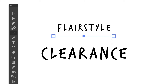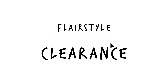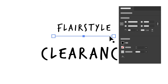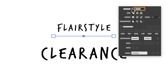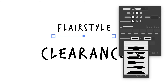You'll immediately notice that we've created a visual hierarchy between Flare Style and clearance, but this line doesn't match the look we're going for. There are lots of ways to give a line more character. From the options in the stroke panel you can make the stroke weight thicker, round the corners of the lines, and even experiment with different profiles from the presets included.